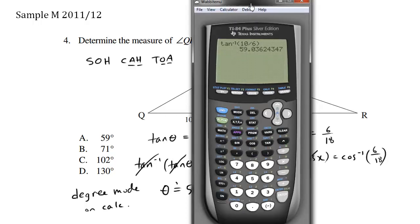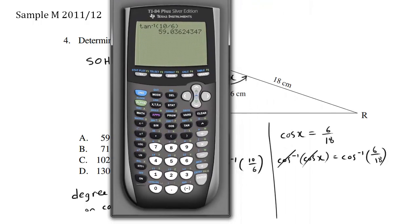So we'll do that. So what we have here is the second cosine, which is the cosine inverse of 6 divided by 18. Enter. 70 degrees.